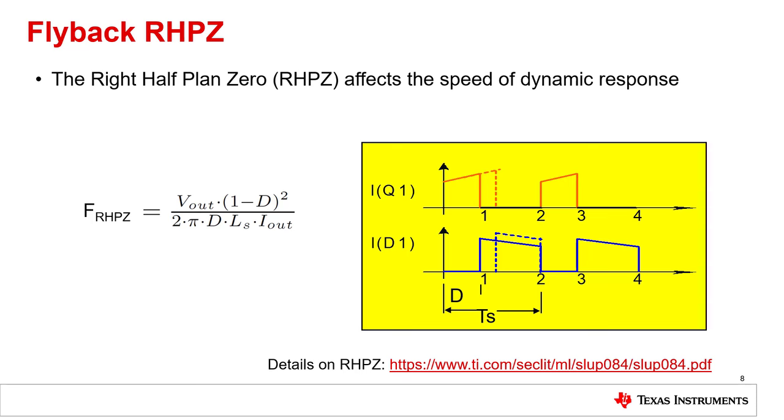The formula shows that the frequency is inversely dependent on the output current, so worst case is at maximum output current. Calculate the secondary inductance with the square of the ratio from the primary inductance. For example, if the secondary winding has half the turns of the primary, the inductance has to be divided by 4. For more details have a look at this paper from Lloyd Dixon.